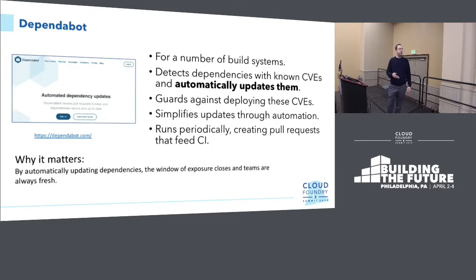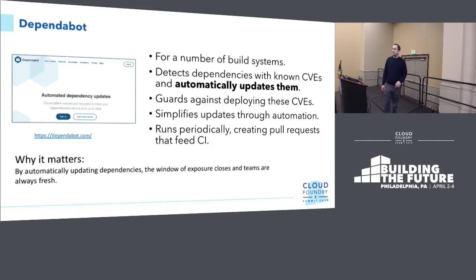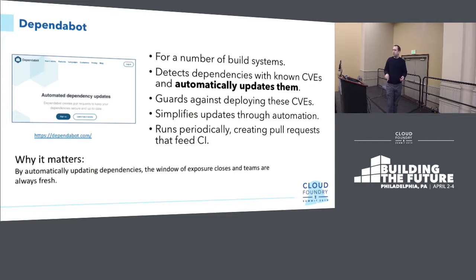Dependabot picks up where that leaves off — it hooks into the build system, scans and identifies CVEs, but instead of just flagging them, it will actually contribute a pull request to upgrade that library. Constantly, it will say, 'This library contains a known vulnerability, you should not ship that — here's a patch to upgrade to the next version.' It simplifies updates through an automated mechanism, and all you have to do is accept those pull requests and let the application rebuild without those vulnerabilities.